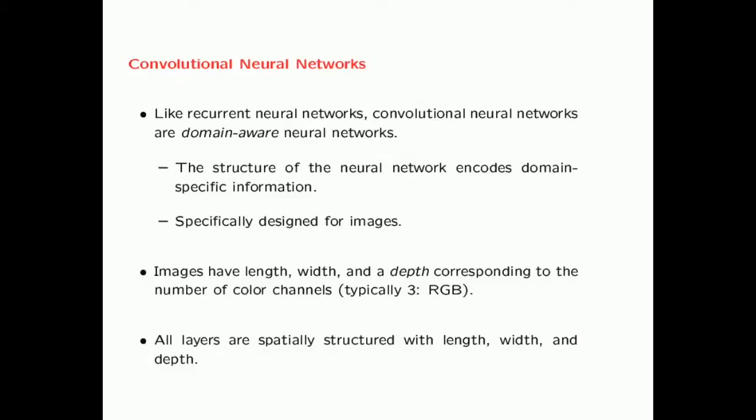The layers also have a structure which matches the specific structure of images. Images have a certain type of structure with a length, a width, and a depth corresponding to the number of color channels. For example, typically an input image would have three color channels corresponding to red, green, and blue. In a convolutional neural network, all layers, including the input layer, are spatially structured in a similar way with length, width, and depth.